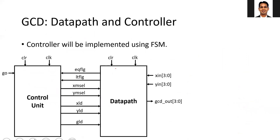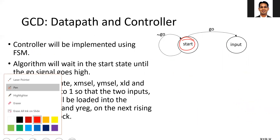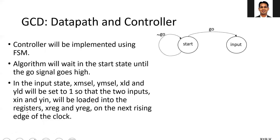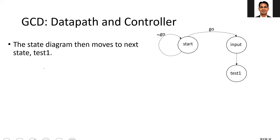The control unit is implemented using an FSM. You start with the FSM in the start state and wait for the go signal. If go is not one, you remain in the start state. Once go is one, you go to the next stage, which is the input state. In the input state, you copy the data inside your registers. When you are in the input state, you make xm_select equal to one, ym_select equal to one, xld equal to one, yld equal to one, and the data will be copied into the registers.